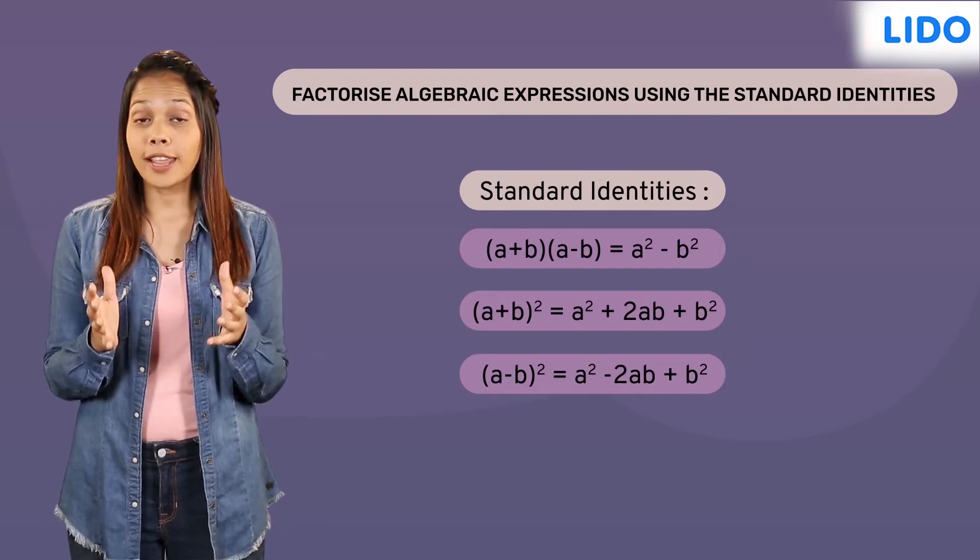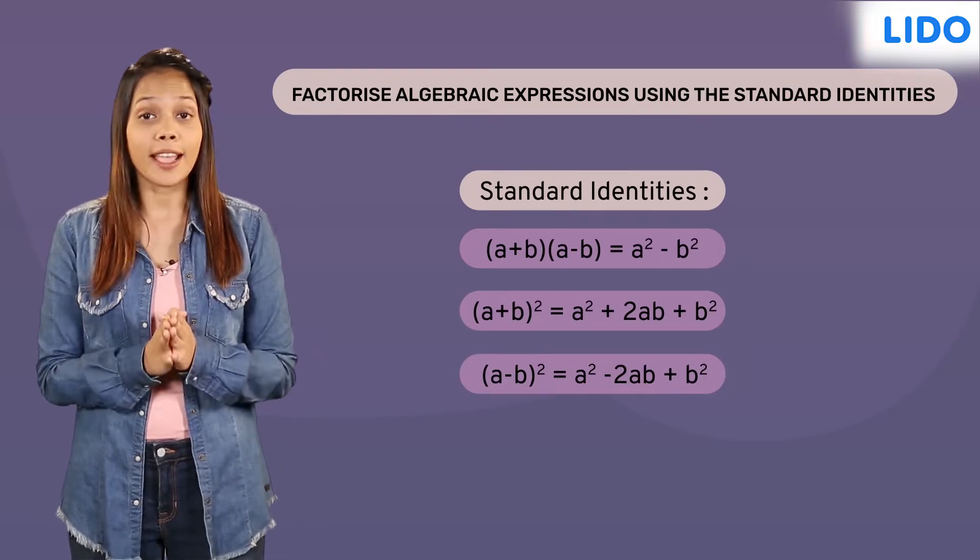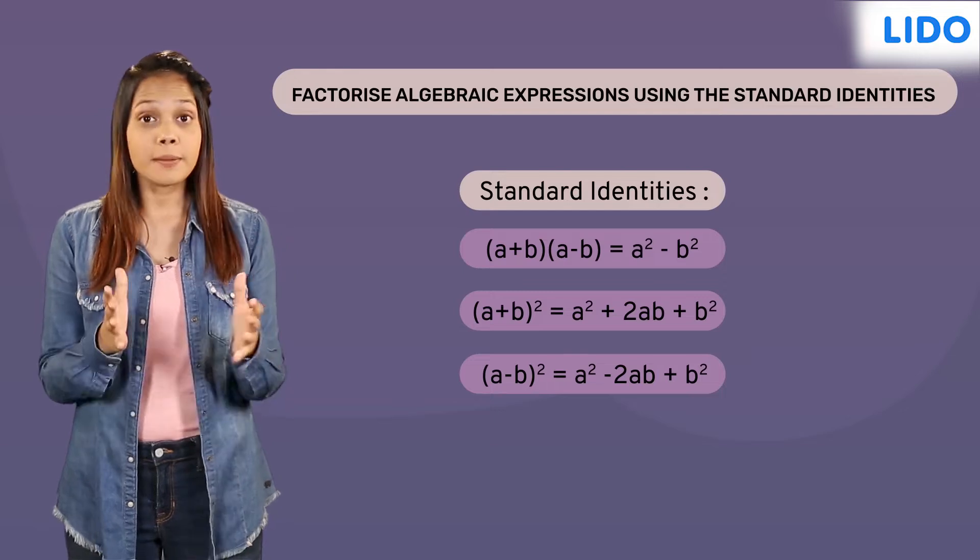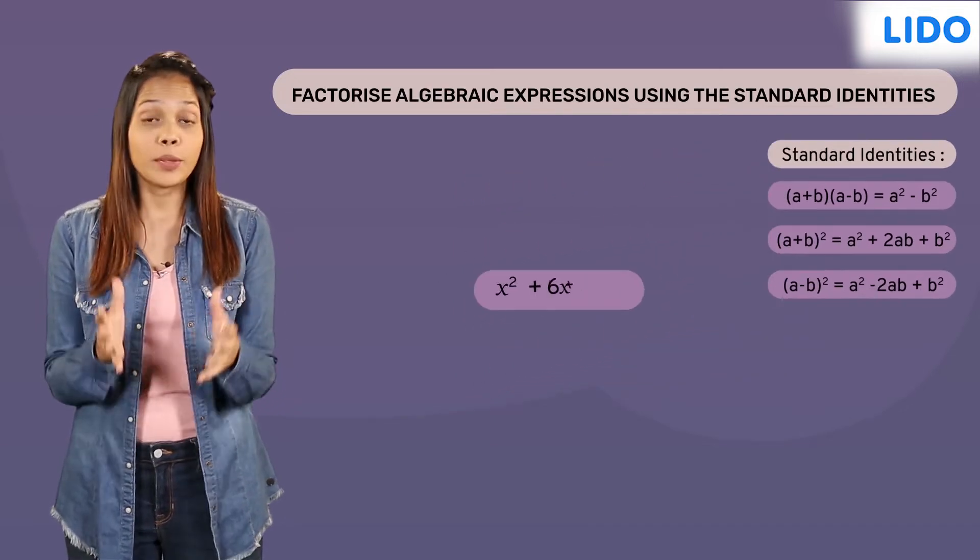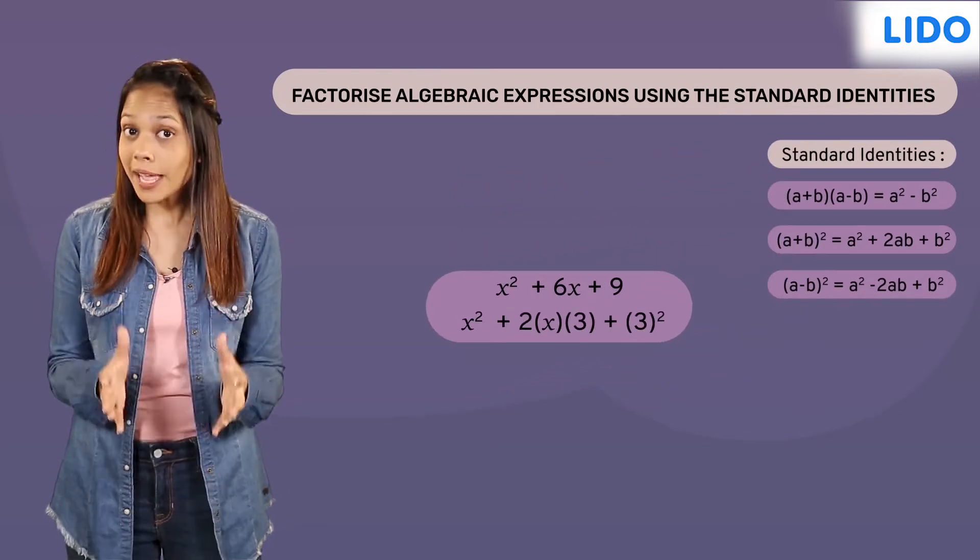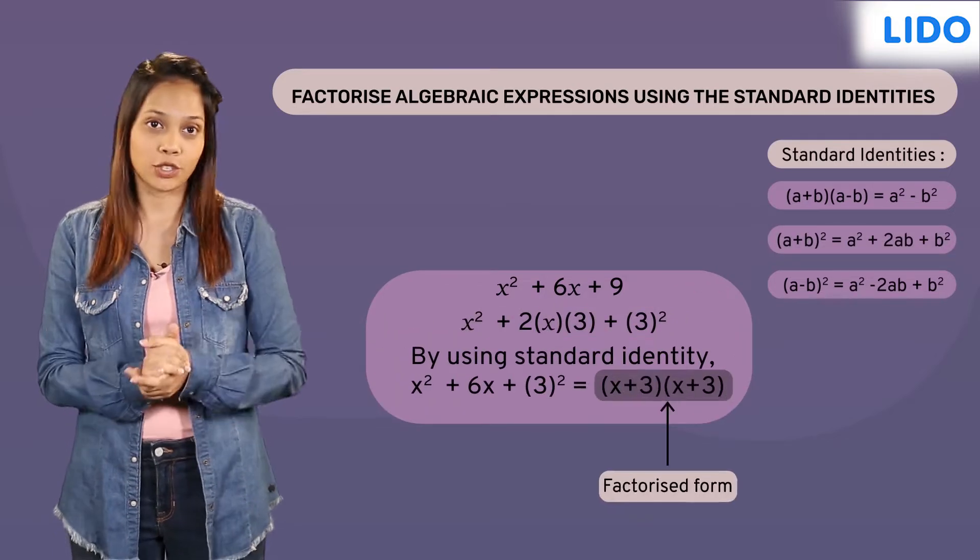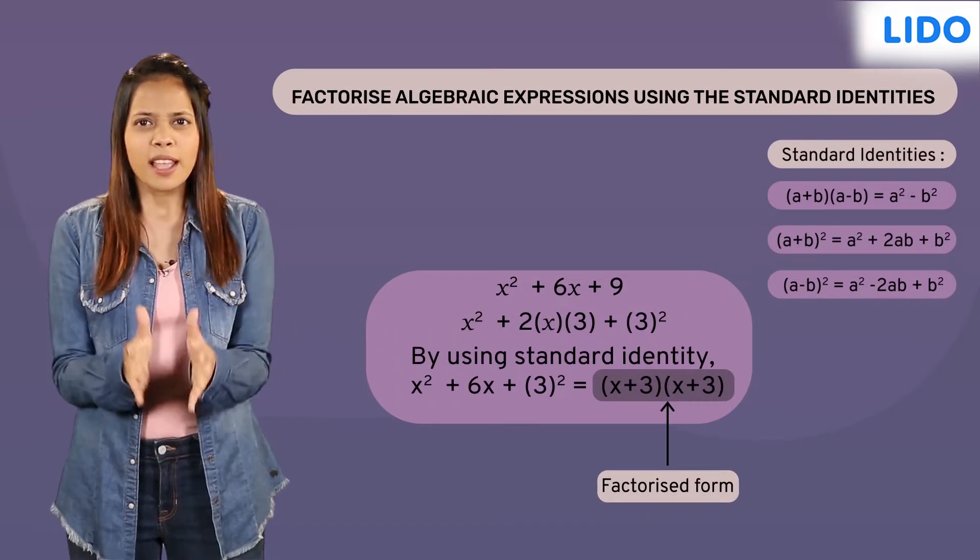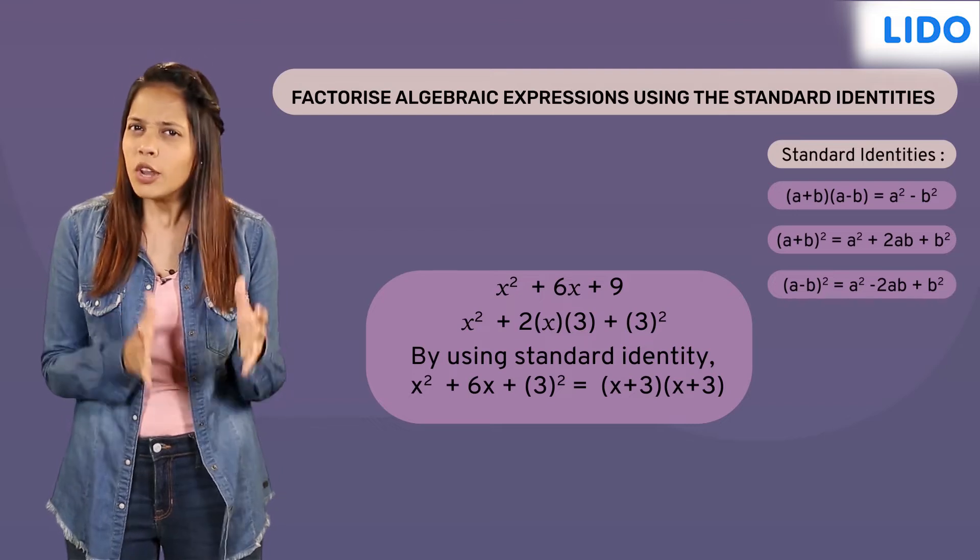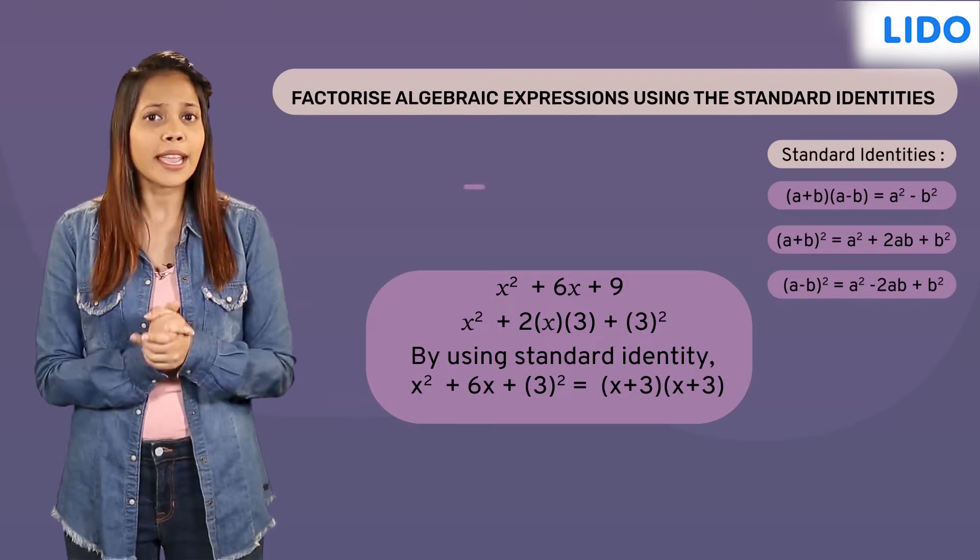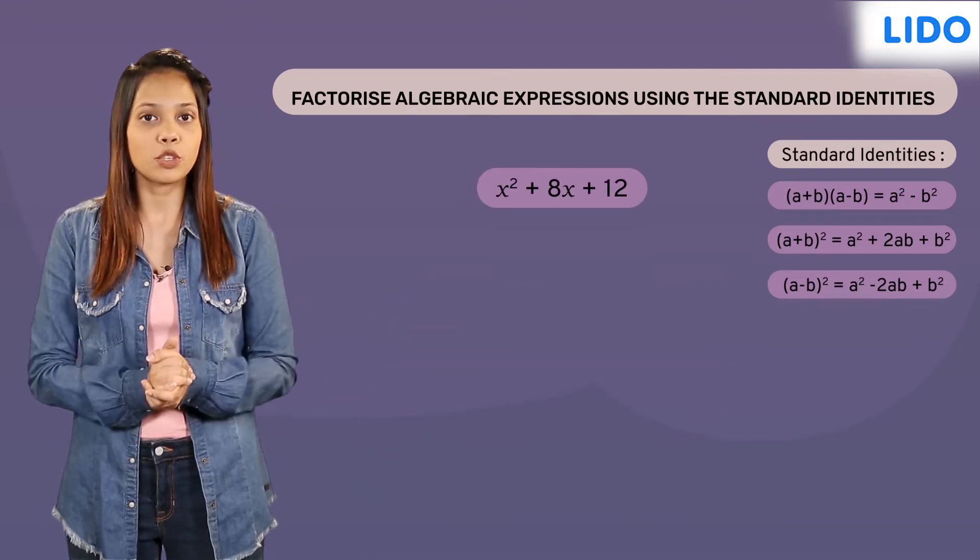To factorise an algebraic expression using standard identities, we must first compare the given expression with the identities and if it matches with an identity, then we can factorise it using the identity relation. But sometimes, the given expression may not match with any of the standard identities like in the example shown.